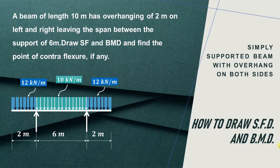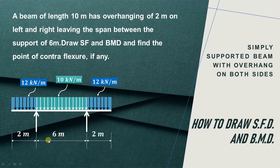In this video we will try to understand how to find out the point of contraflexure in case of an overhanging beam. It is a simply supported beam with overhang on both sides. The beam has a total length of 10 meters — 6 plus 2 plus 2 — with overhang of 2 meters on the left and right, leaving a span of 6 meters between the supports. We have to draw the shear force and bending moment diagram and find out the point of contraflexure, if any.